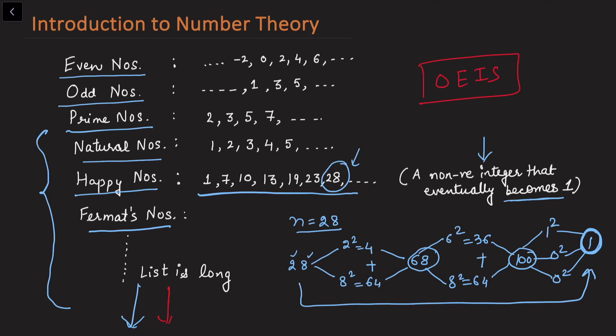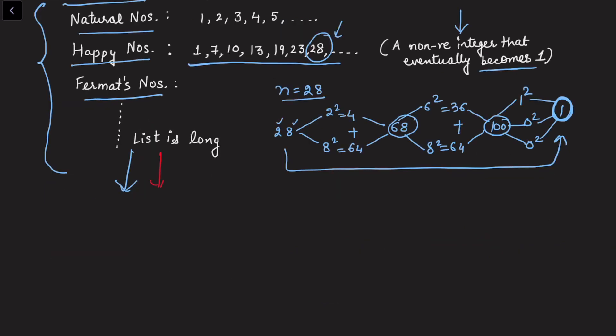Numbers are not only arranged in sequences, but sometimes they follow a shape. To understand what I mean by shape, let's take an example of triangular numbers.